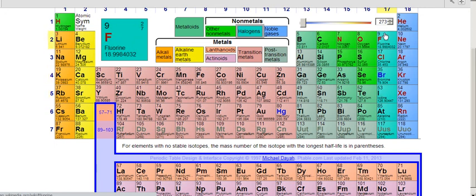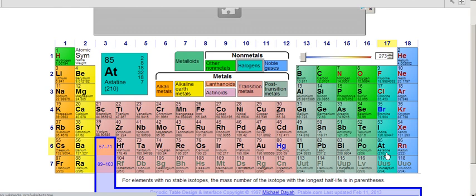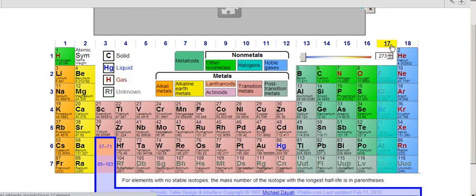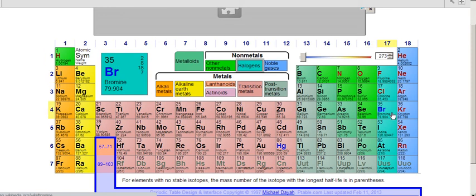They both have seven valence electrons. They're in the seventh column in the main group: one, two, three, four, five, six, seven. So they have seven valence electrons to participate in bonding, and they each want one more electron to have a full octet.